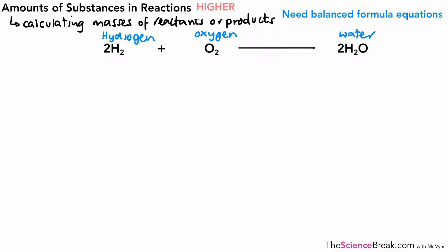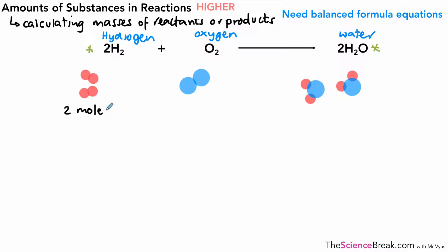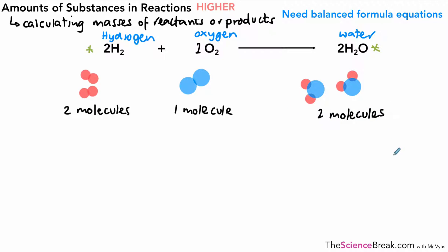This balanced equation actually gives us a lot of information, so we can figure out what it's telling us. The first thing it tells us is that we have two molecules of hydrogen reacting with one molecule of oxygen. We don't usually write the one in front of a substance if there's only one, but we can put that in just so we can see — and then we end up with two molecules of water. So we've got two, one, two in terms of the number of molecules.